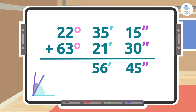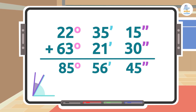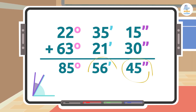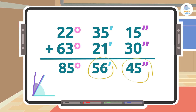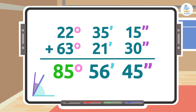Lastly, we'll add the degrees: 22 degrees plus 63 degrees is 85 degrees. It's important to remember that the answers for the seconds and minutes columns must have a value between 0 and 59. In this case we already have the final result: 85 degrees, 56 minutes, and 45 seconds.